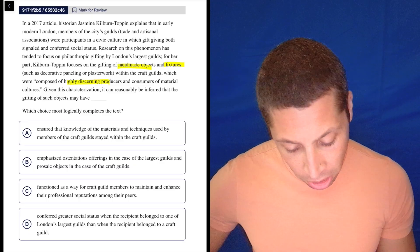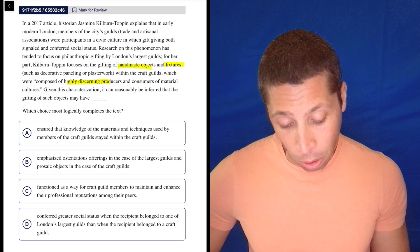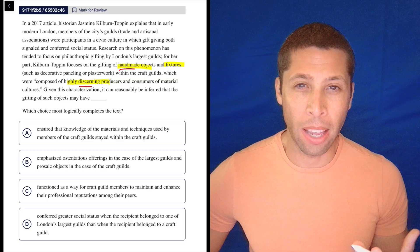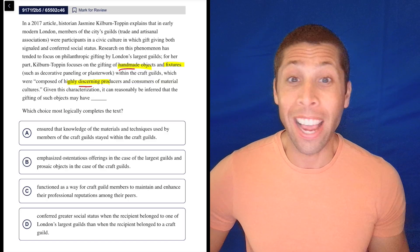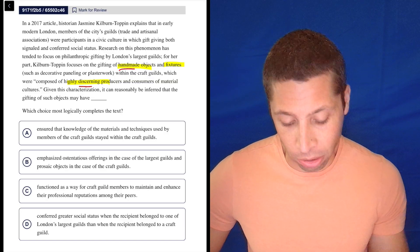So given this characterization, it can reasonably be inferred that the gifting of such objects may have... I don't know, it has something to do with the fact they're handmade. Discerning means that they notice things, so they have good taste, I guess, is what we're talking about. And since these are craftsmen, I think it matters that they're handmade.